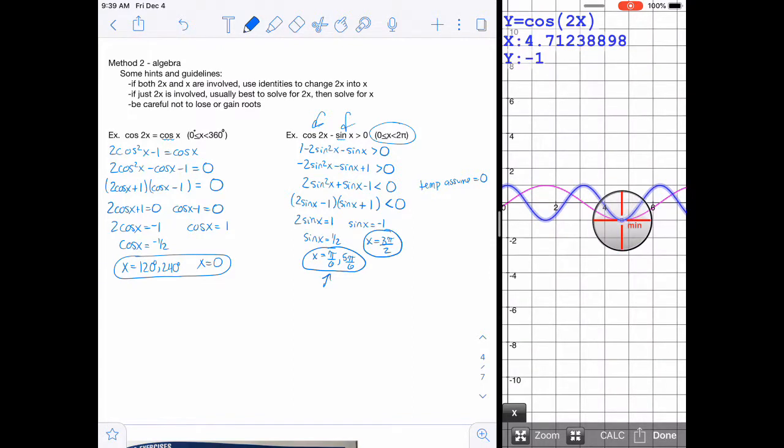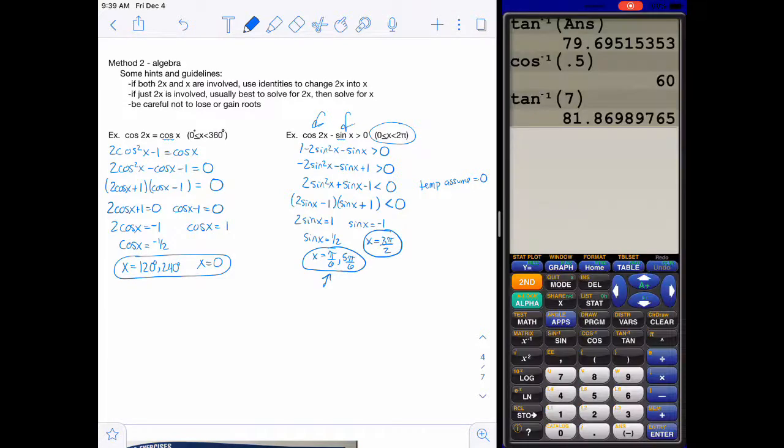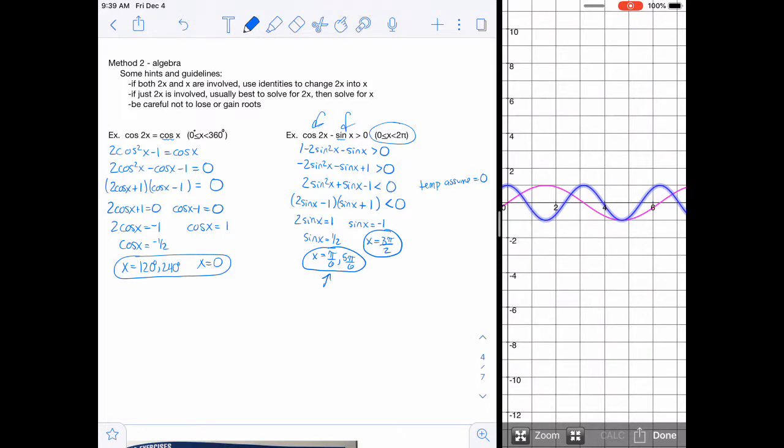But the question is, where is cosine of 2x greater than sine x? So in other words, where is the blue one higher than the pink one? So the blue one's higher from the very beginning here at 0 up until that first intersection. So that would be from 0 to pi over 6. And then the pink is higher for a little bit up until this one, the 5 pi over 6. And then from 5 pi over 6, actually to the end, the blue is higher all the way because our 2 pi would be right there at the max. That's the 2 pi mark, and we only have to go up to 2 pi.